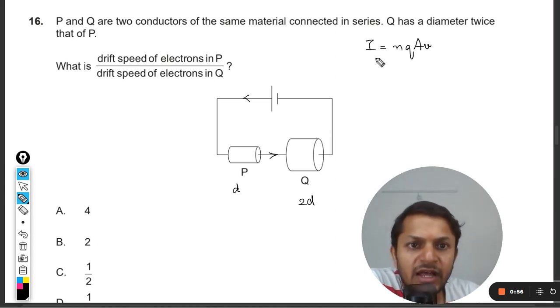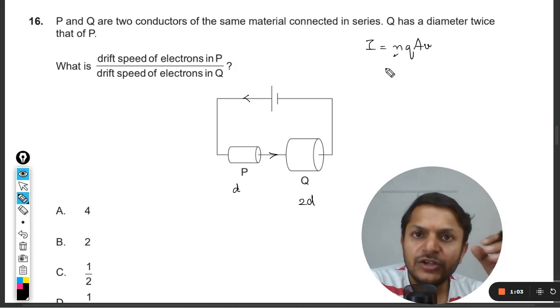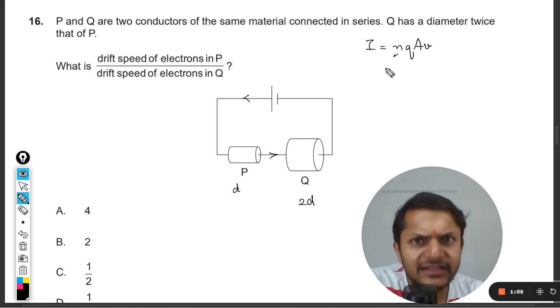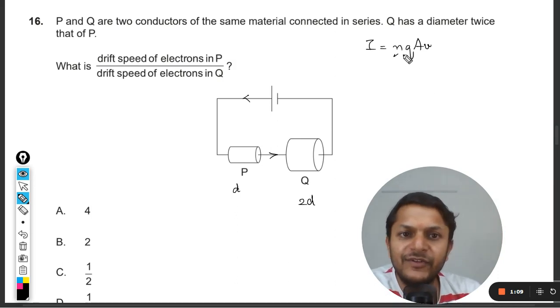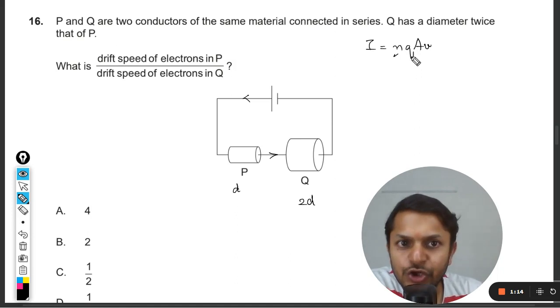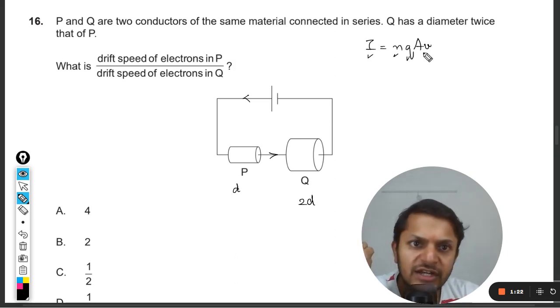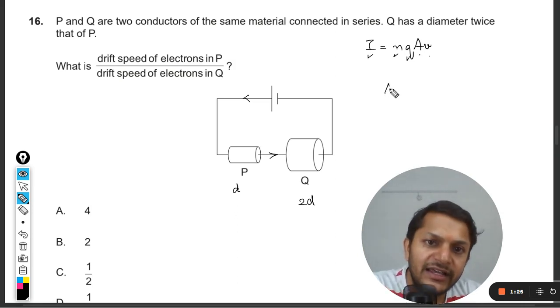The current is the same. They are made up of the same material, which means that n is number of electrons per unit volume, so that will be the property of the material you are using—copper, iron, silver, whatever—so n will be constant. Current will be constant in both of the cases. The charge q is basically the charge on one electron; you can also write it as e. So this is constant, this is constant, so these three are constant.